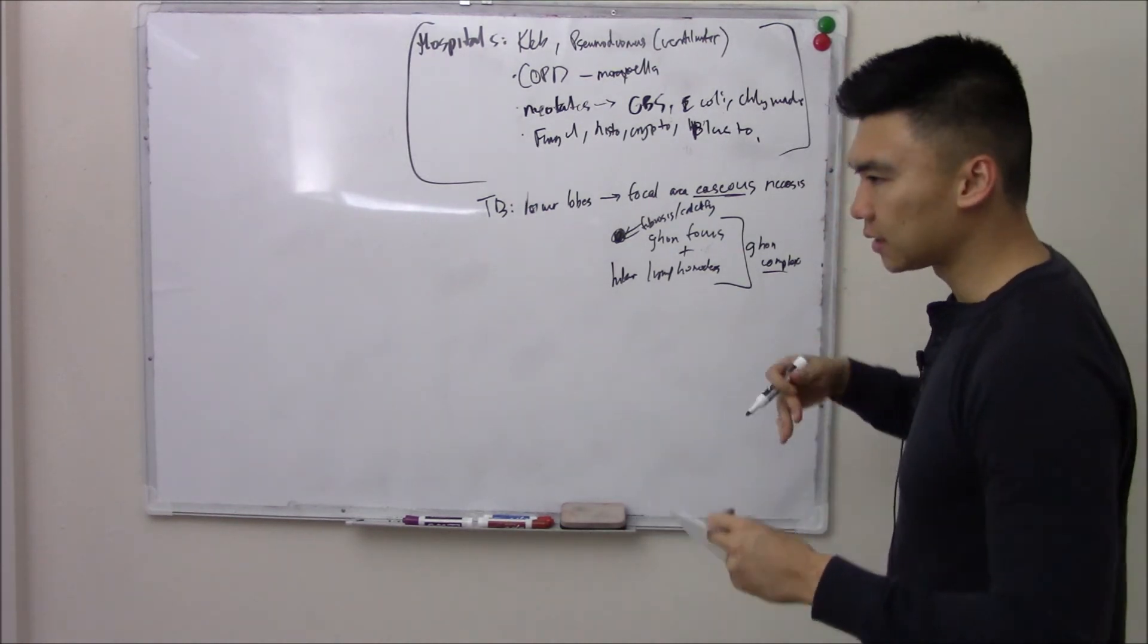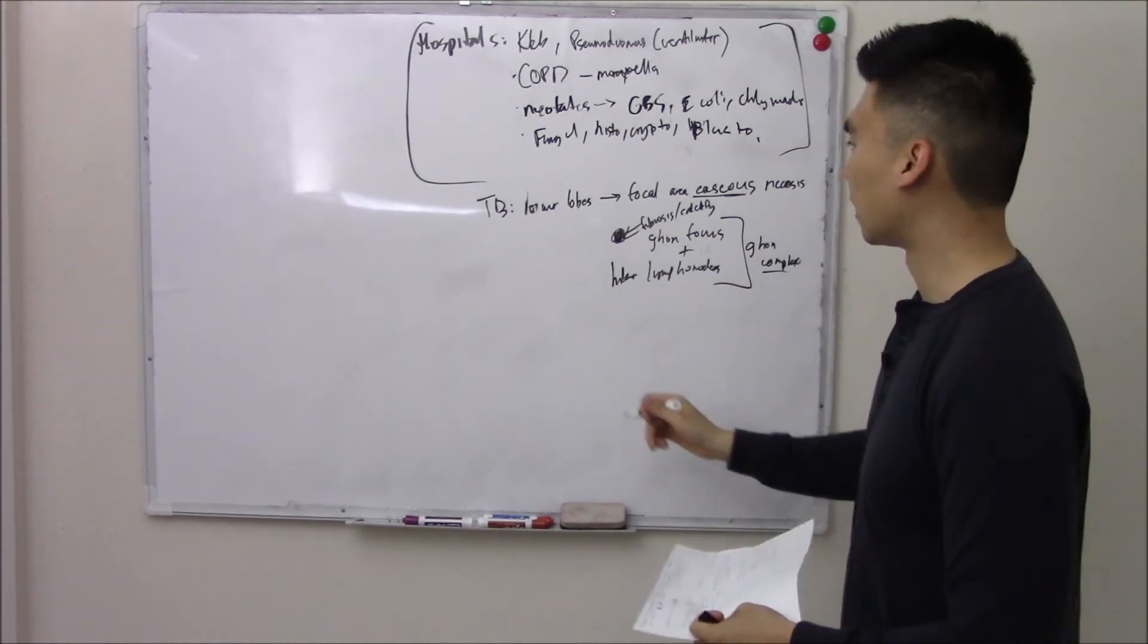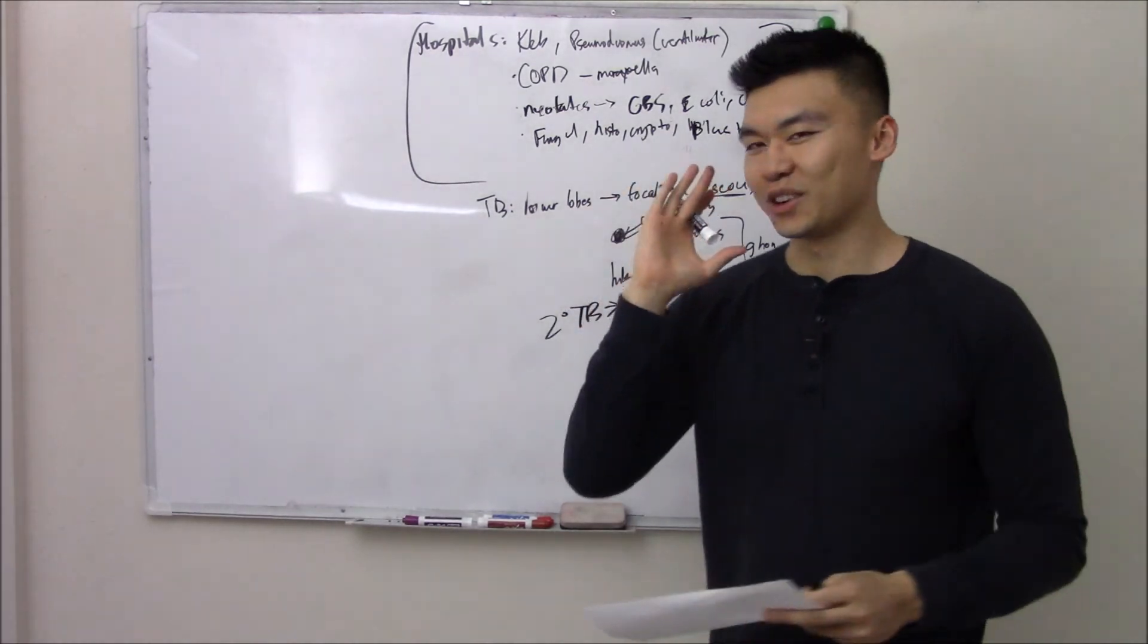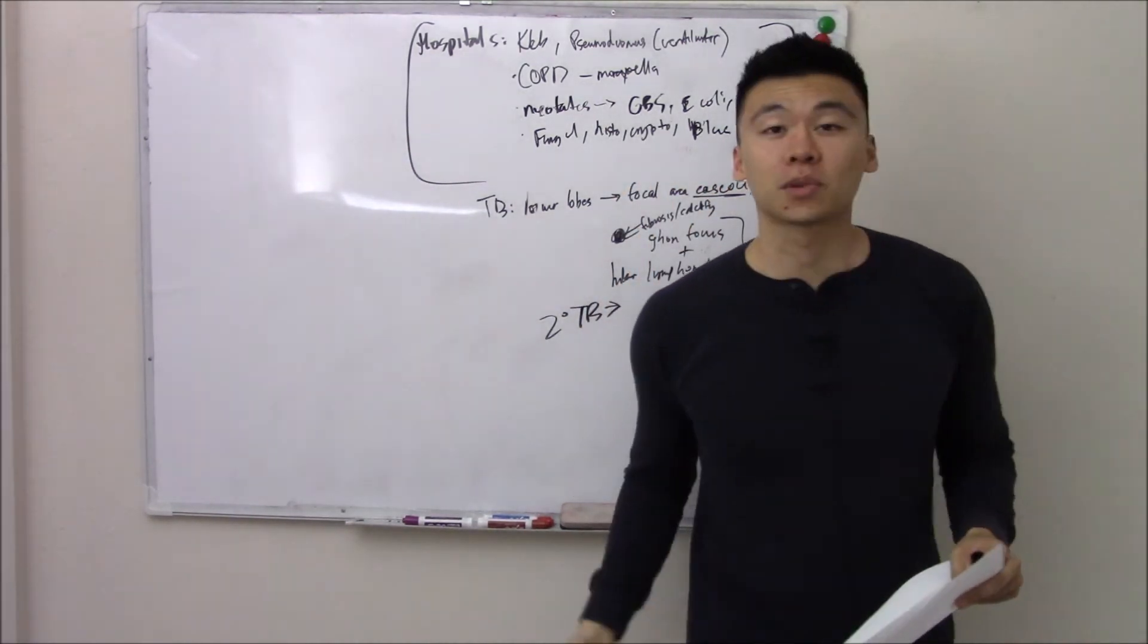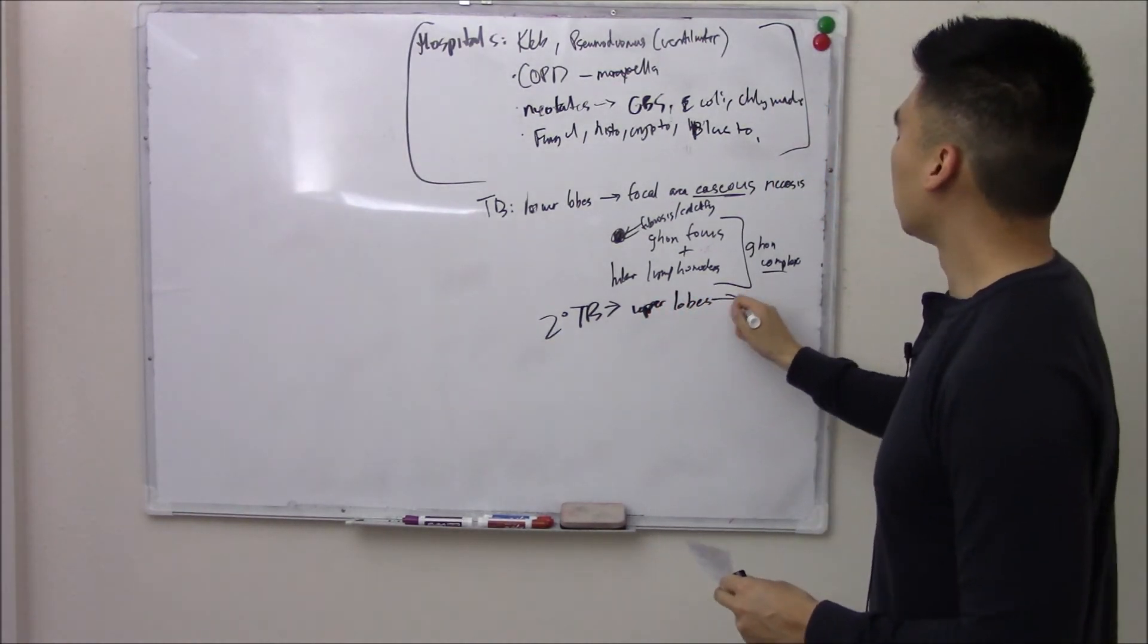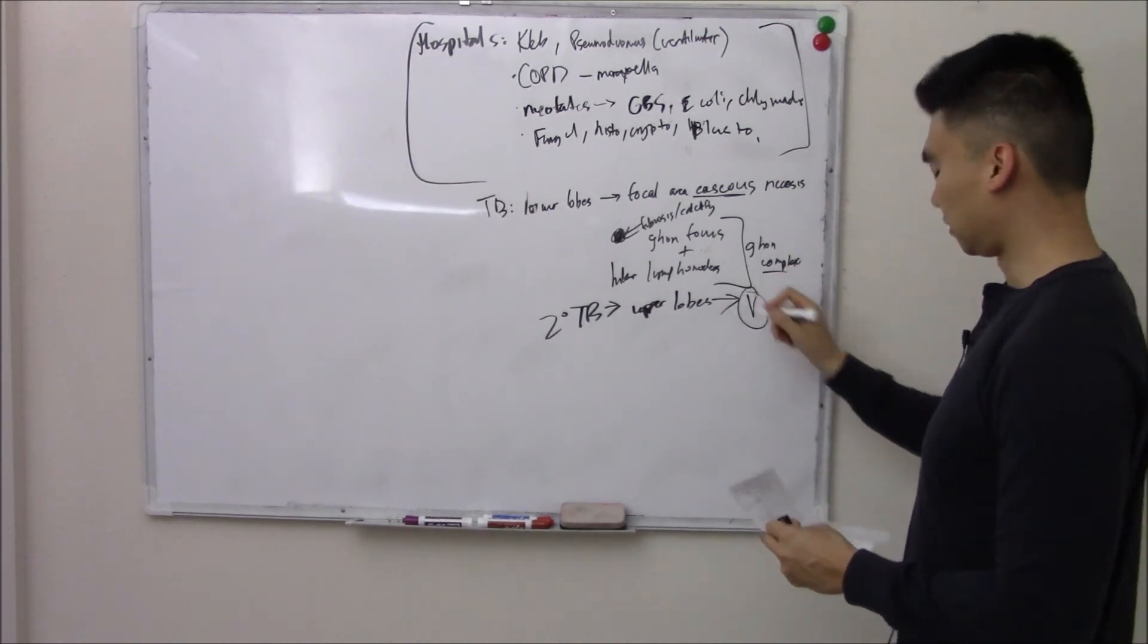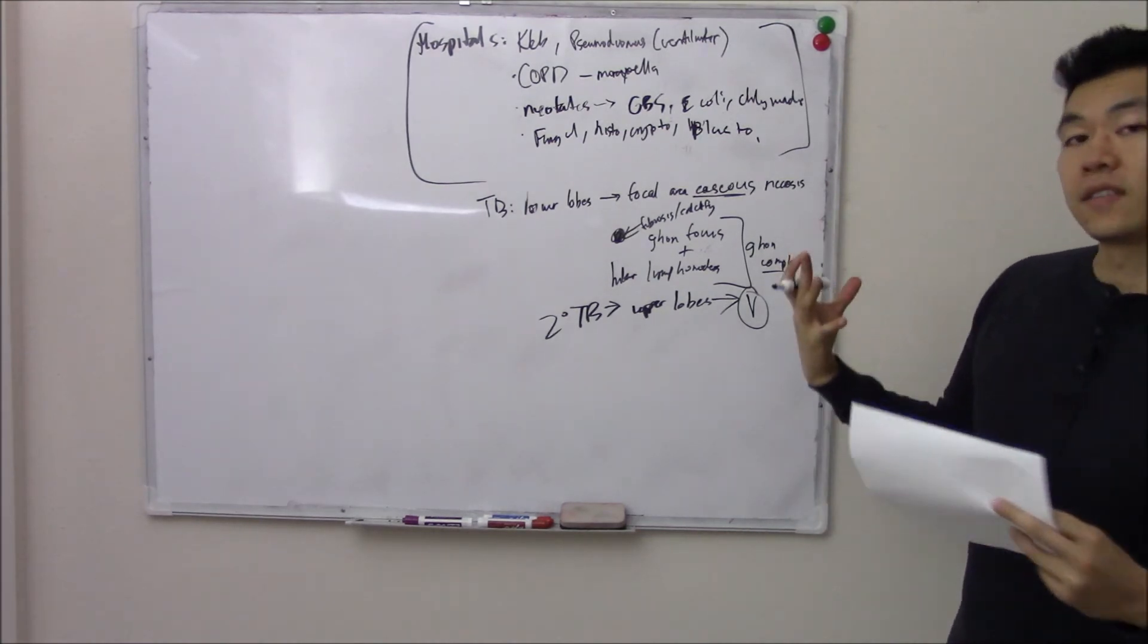If your body fights it, it will suppress it and then you'll have latent TB. Sometimes that latent TB can reactivate. And secondary TB reactivates in what part of your lungs? We went over this. If you said upper lobes, you're absolutely right. Why? Because it is an aerobe. It needs air. And your upper lobes had the most ventilation. It had the most air. So it can reactivate in your upper lobes.